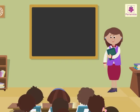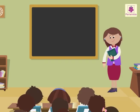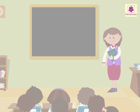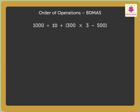Today, let us learn the special mathematical rule called the order of operations, B-D-M-A-S. If we have more than one operation in a given problem, then there are certain rules that need to be followed to solve it.